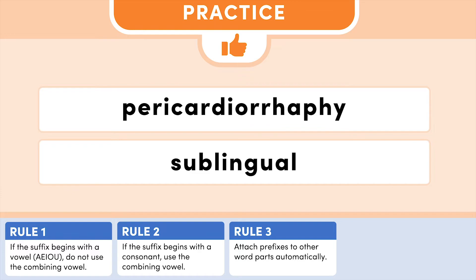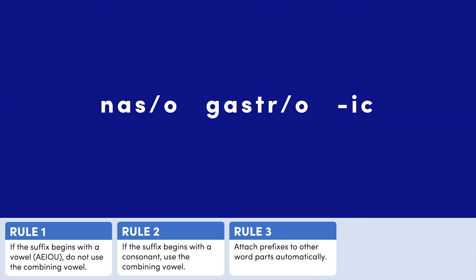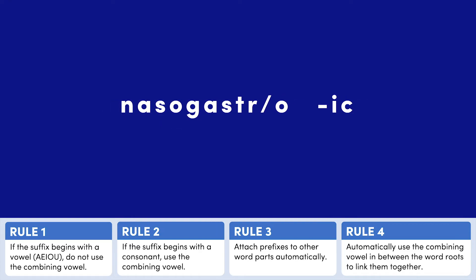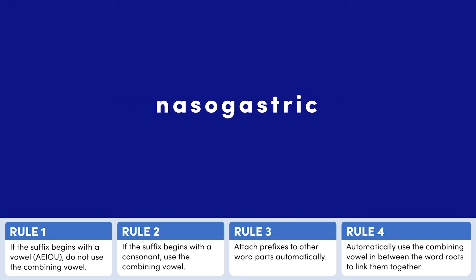Now let's move on to combining multiple word roots. Notice the combining vowels at the end of both word roots. Since we are attaching one word root to another, we will focus only on the combining vowel in between the two word roots. Rule 4 states to automatically use the combining vowel in between the word roots to link them together. In this example, we use the combining vowel in between the word roots to form 'nasogastro.' Now let's attach the suffix. Since the suffix begins with a vowel, we will use Rule 1 to drop the combining vowel and complete the term 'nasogastric.'